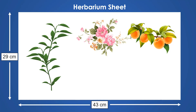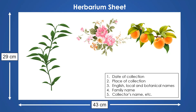Along with the plant materials, basic information must also be added, including the date of collection, the geographical location where the specimen was collected, and the English, local, and botanical names of the plant. This naming process is called nomenclature and should be done by the ICBN. The specimen should then be categorized into a particular family, and the name of the collector and discoverer should also be added.